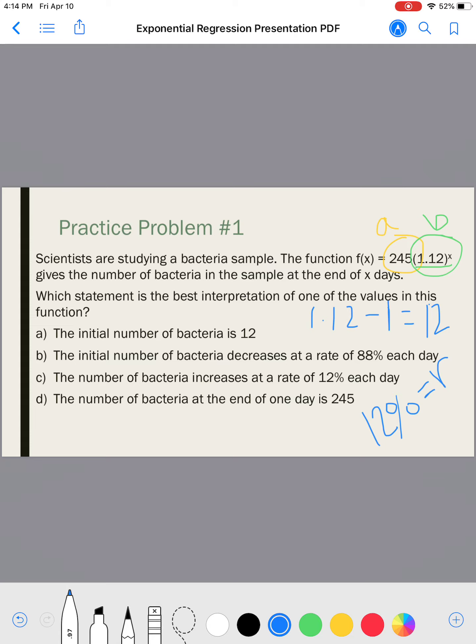Now that I've broken down this problem, let's look at all the answer choices. A, the initial number of bacteria is 12. No, the initial amount of bacteria is 245, the A value. B, the initial number of bacteria decreases at a rate of 88%. No, my percentage is 12%. C, the number of bacteria increases at a rate of 12% each day. Hmm, this is looking real good. I knew this was exponential growth because the B value was greater than 1, and 12% is the R value.